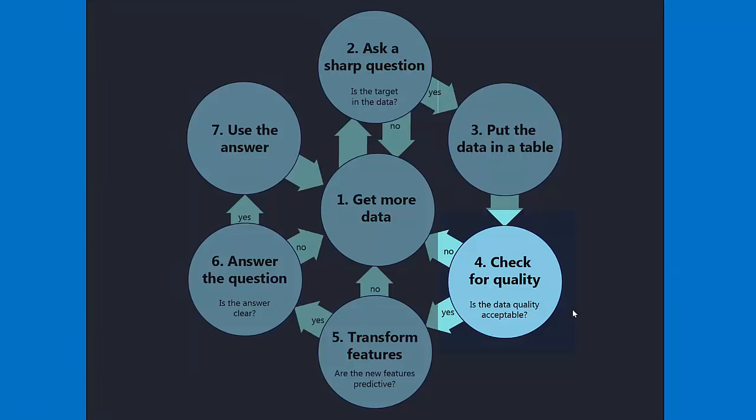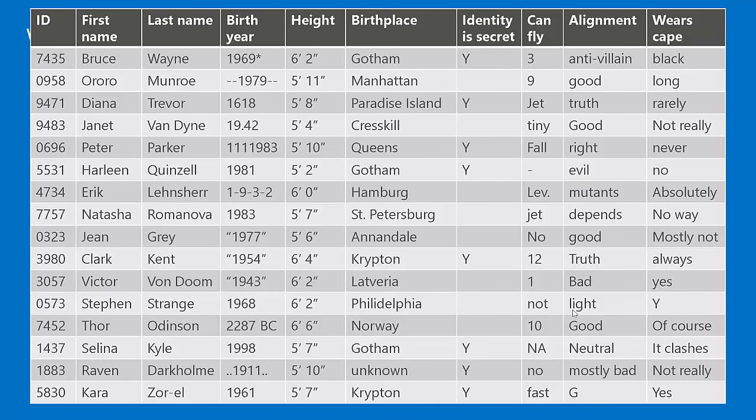After the data is in a table with one row per instance of the target, the next step is to check for quality. We want to make sure the data is acceptable to use. Here's a table — going through the columns, the very last row is our target variable: 'wears a cape.' This is data on different superheroes and super villains, and we want to predict whether a new superhero or super villain wears a cape based on everything else we know about them.